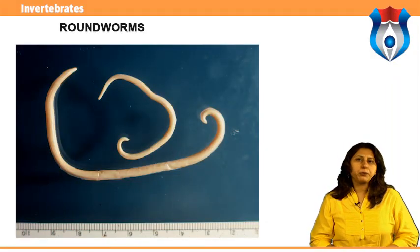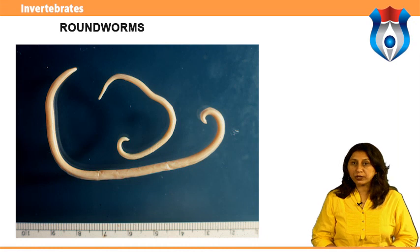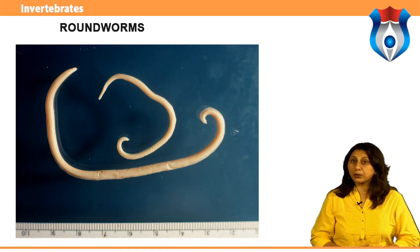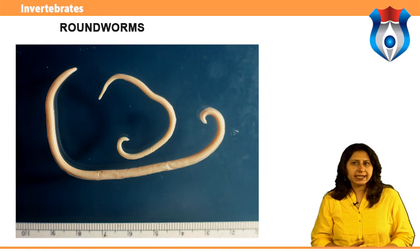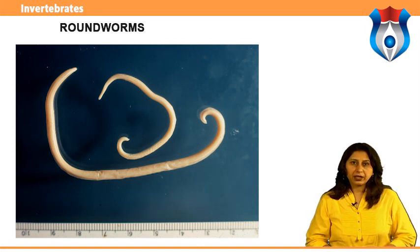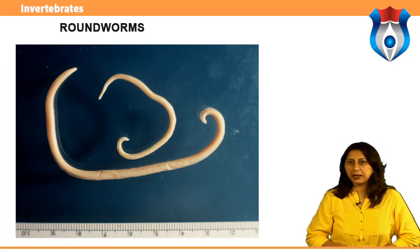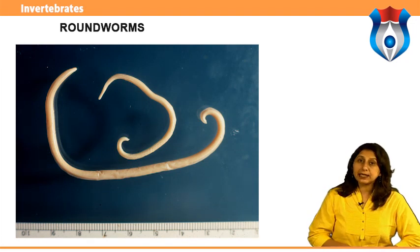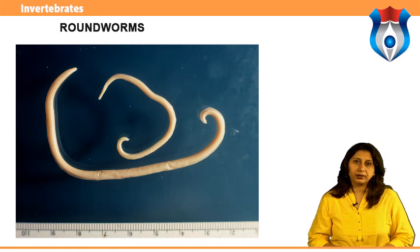Roundworms are the most common parasitic worms found inside a dog. Almost all dogs become infected with them at some time in their lives, usually as puppies. Roundworms may be contracted in different ways, making them easy to spread and hard to control.